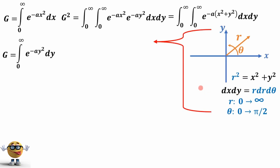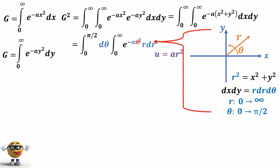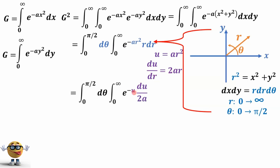So we substitute this into our integral. R goes from zero to infinity and theta goes from zero to pi over two. The integral now has r dr instead of dx dy. We separate the dθ out, and instead of x squared plus y squared, we now have r squared. We can do a u-substitution: u equals ar squared, so du/dr equals 2ar. Looking at r dr, substituting gives us du over 2a.